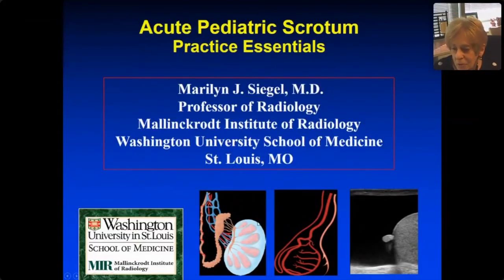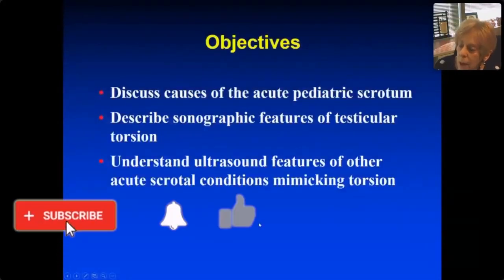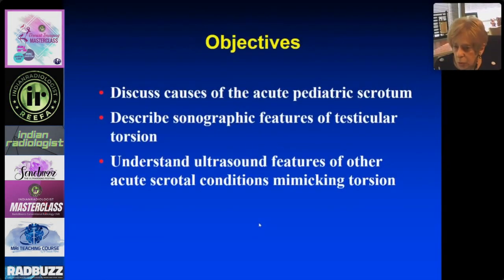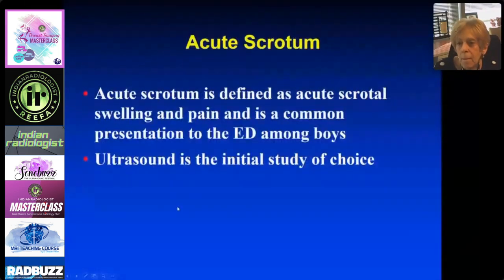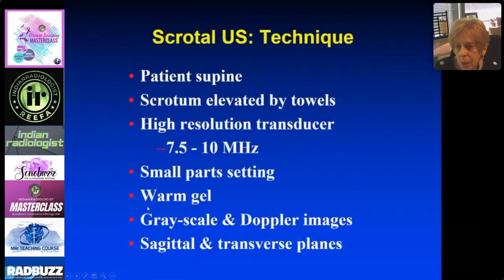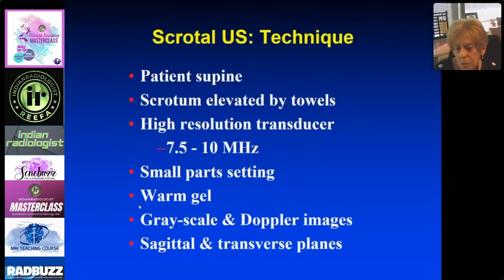In the essentials of pediatric ultrasound, we're looking at acute problems in the scrotum — the ultrasound features of torsion, which is what we're always concerned with, and other findings of acute scrotal diseases. The acute scrotum is defined as acute scrotal swelling and pain, and it's a common presentation to the emergency department. Ultrasound is the study of choice. Examine the patient supine, elevate the scrotum, use a high-resolution transducer, small part setting, warm gel, grayscale and Doppler imaging, in sagittal and transverse planes.